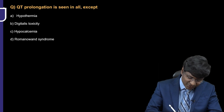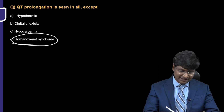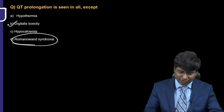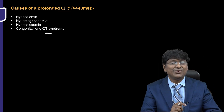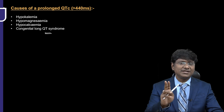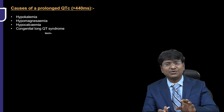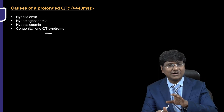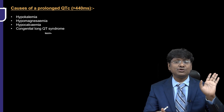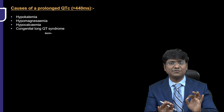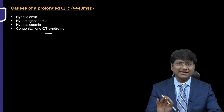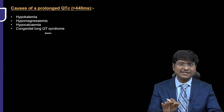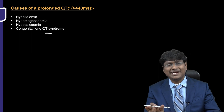Regarding congenital long QT syndromes: the answer is digoxin toxicity does not cause QT prolongation. Romano-Ward syndrome is a form of congenital long QT syndrome. There are multiple types — long QT 1, 2, 3, 4, 5, and so on, discussed in detail in the channelopathies section. The two notable congenital disorders are Romano-Ward syndrome and Jervell and Lange-Nielsen syndrome.